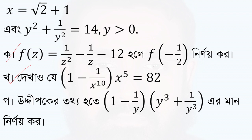We have 1 minus 1 by x to the power 10, into x to the power 5. Therefore x to the power 5 into 1 minus 1 by x to the power 5. So x to the power 5 minus 1 by x to the power 5 equals 82.